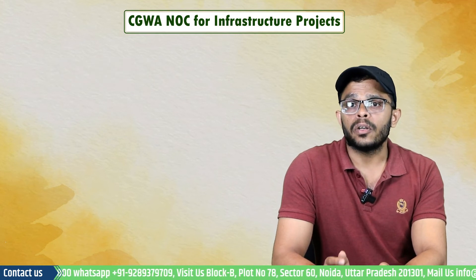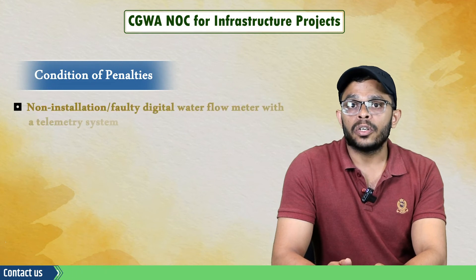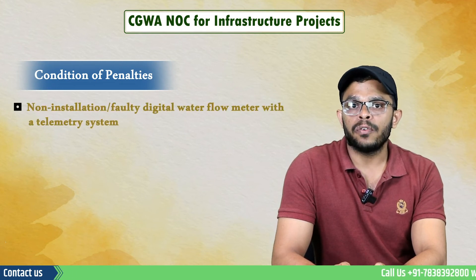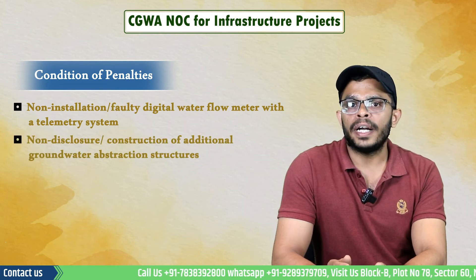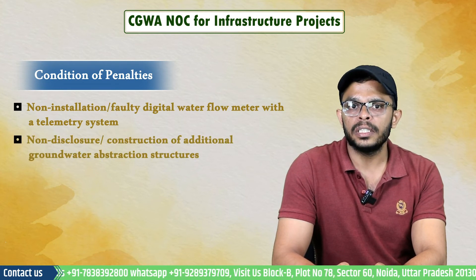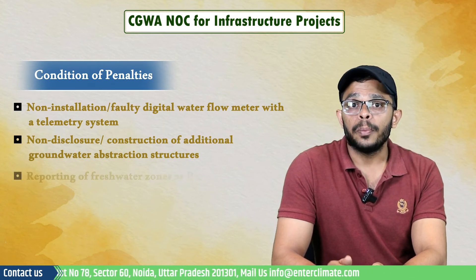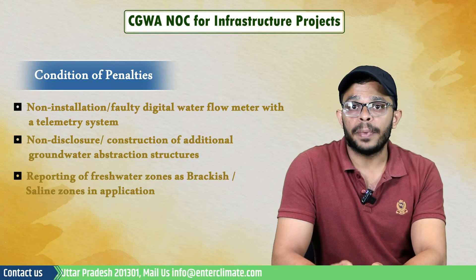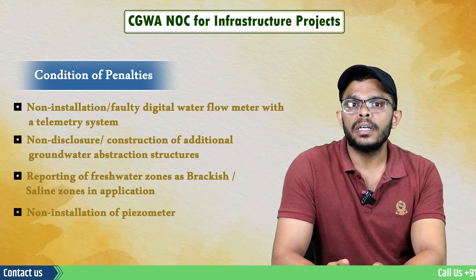CGWA can impose a penalty between rupees 50,000 to 10 lakhs for non-compliance with NOC conditions. These include non-installation or faulty digital water flow meter within a telemetry system, non-disclosure or construction of additional groundwater abstraction structures, reporting of freshwater zones as brackish or saline zones in the application, non-installation of a piezometer, and non-installation or faulty telemetry system.